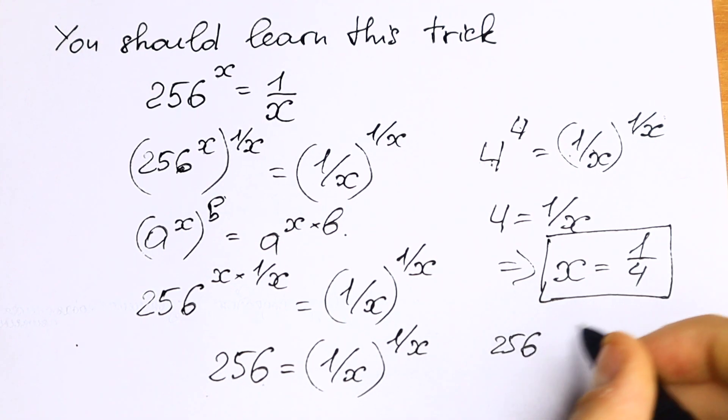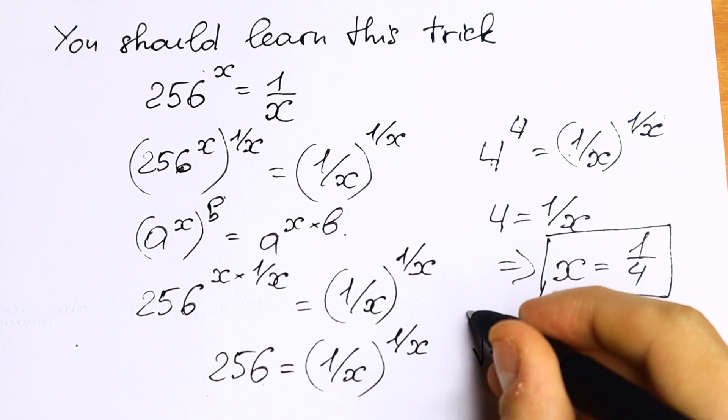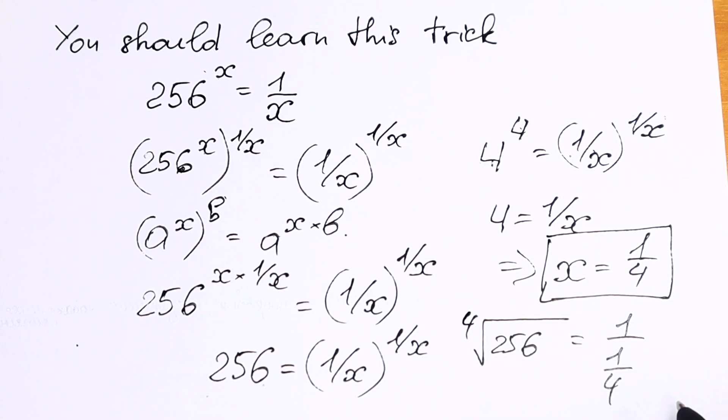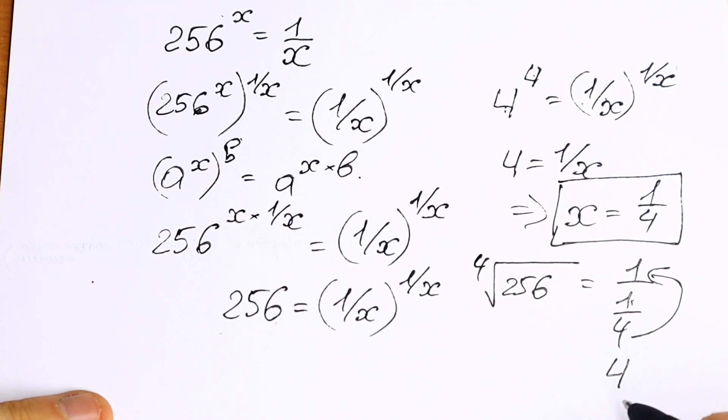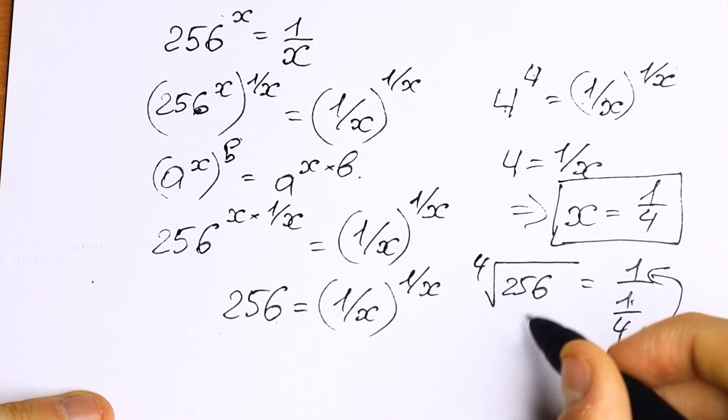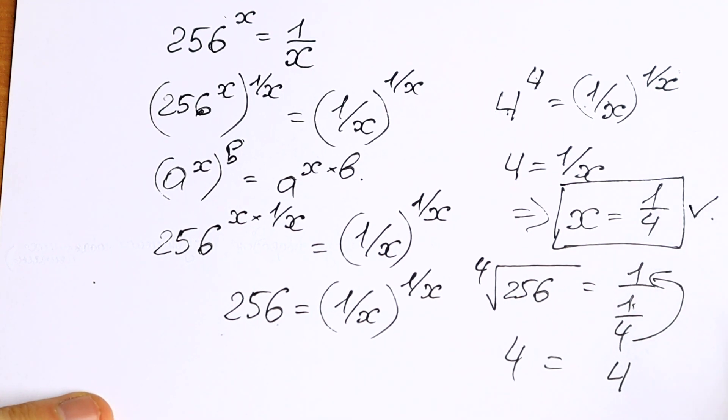256 to the power 1 over 4, it will be 4th root of 256 equal to 1 over 1 over 4. And as you can see, this 4 goes to our denominator, we will have 4 on the right side. And on the left side, if we take 4th root from this number, we will have 4. So 4 equal to 4, so this root is good for us.